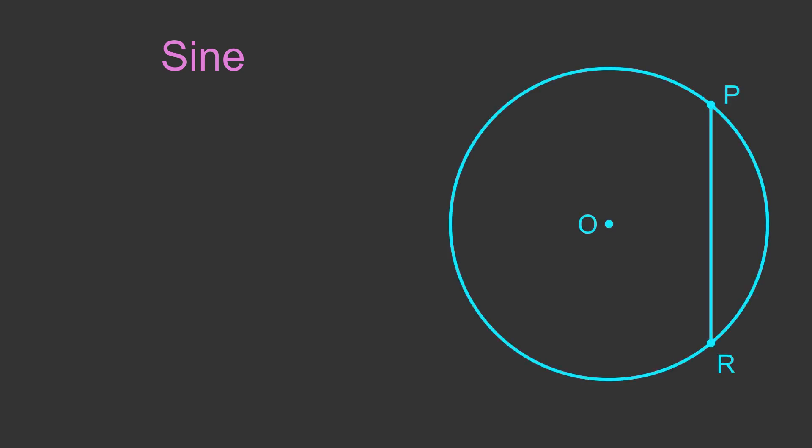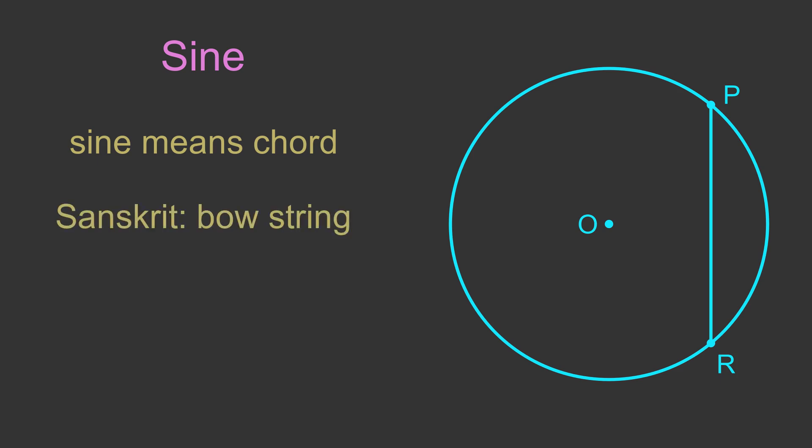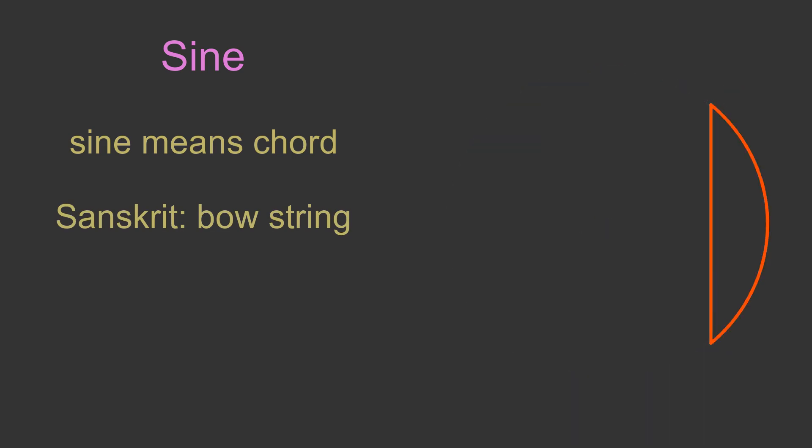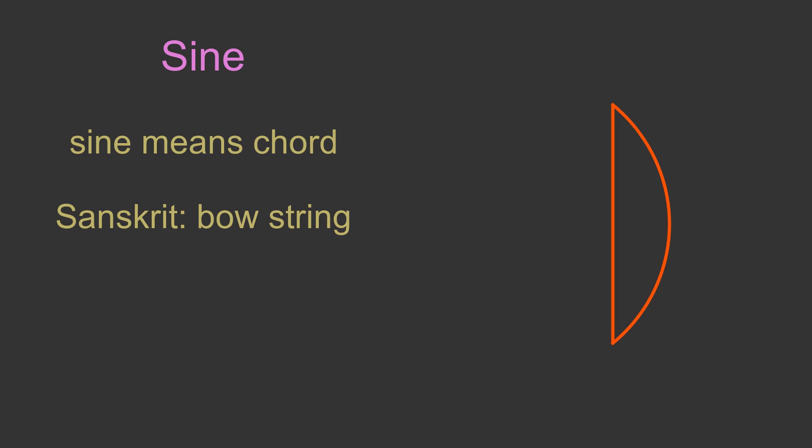The sine function is related to the chord of a circle. A chord is a line between two points on the circumference of the circle. The word sine is an old term for a chord. It originates from the Sanskrit word for the string of a bow, as in bow and arrow, because the chord and arc of a circle look quite like a bow.